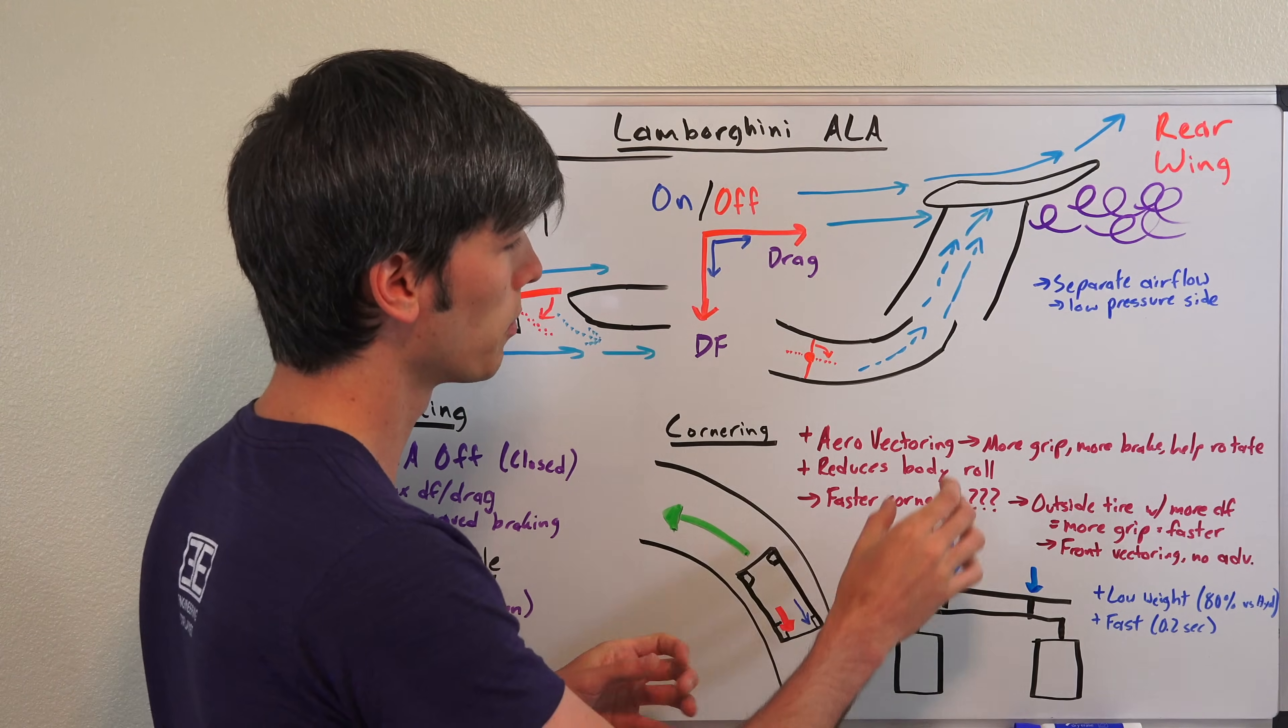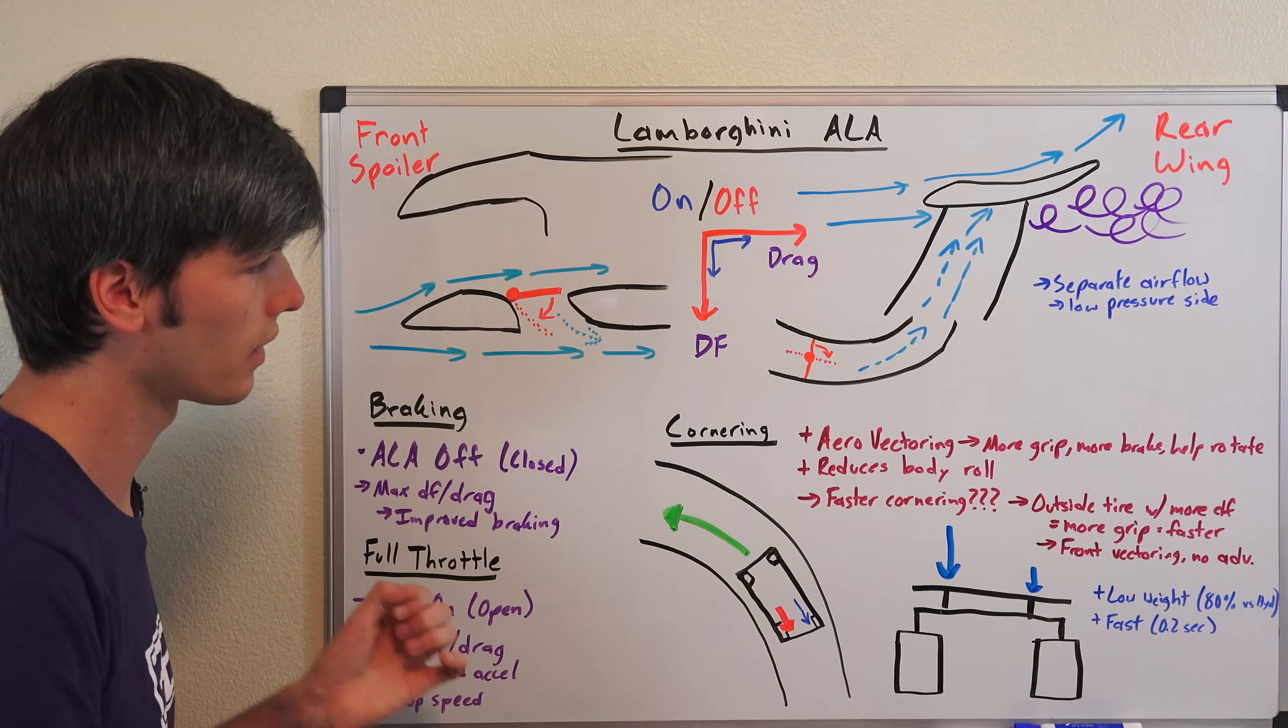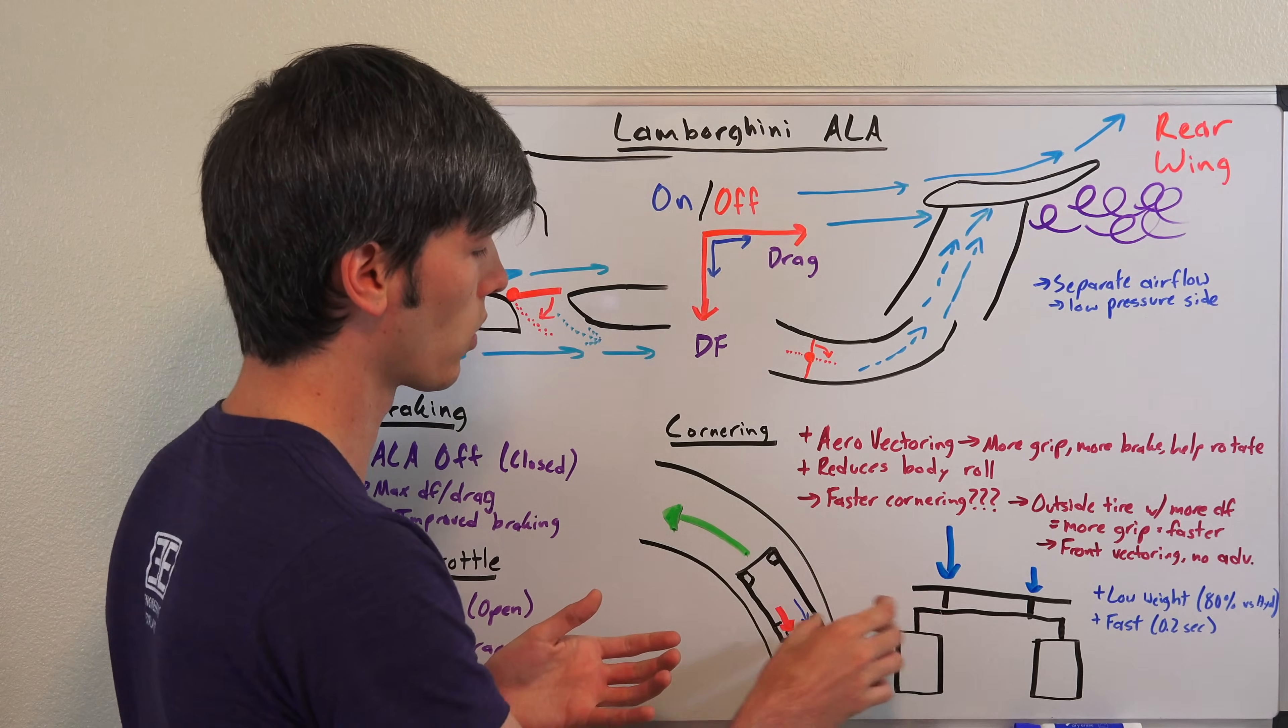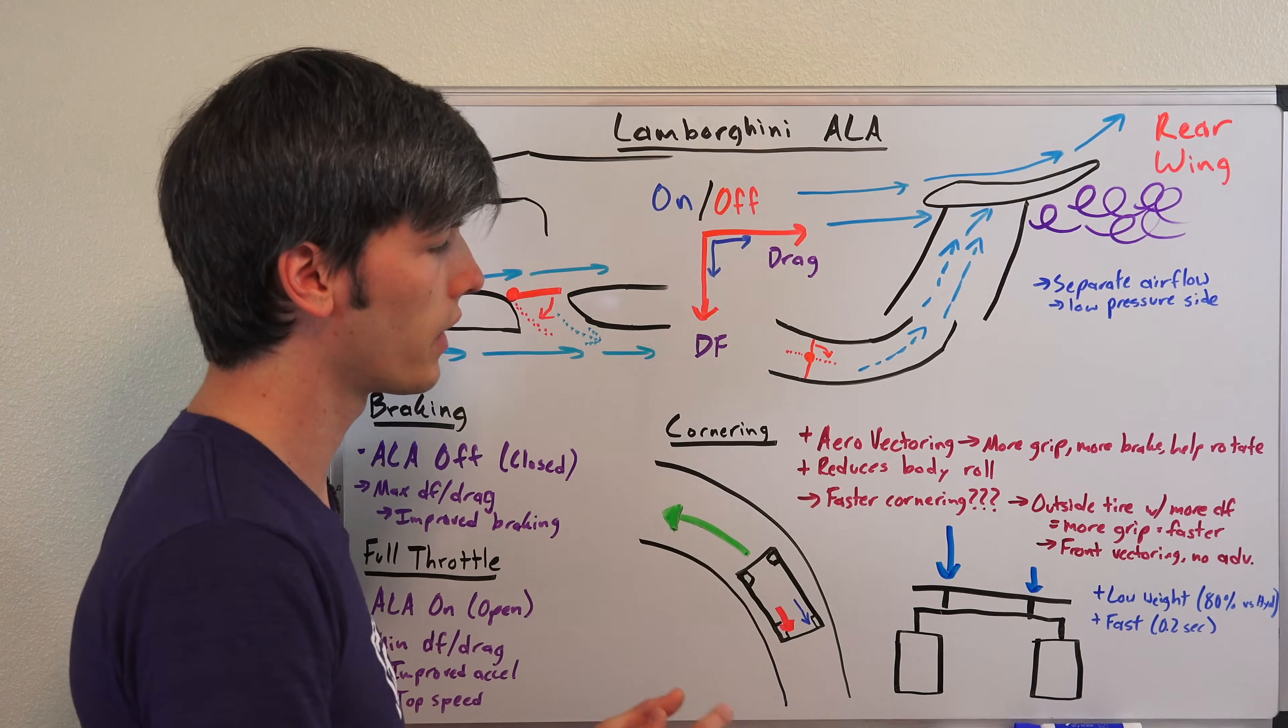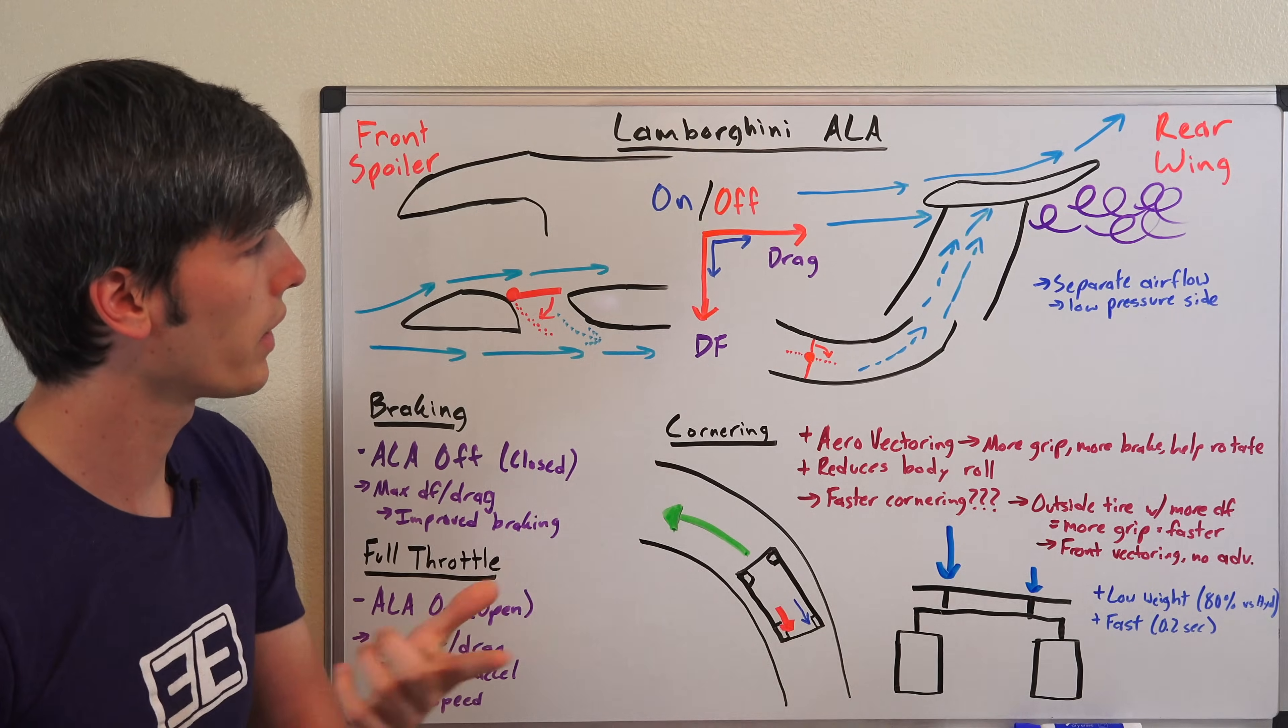For cornering not quite as much, but perhaps you can use a little bit less steering angle because you're going to be braking that inside tire a little bit more. There are real advantages to a system like this though, which I do want to point out.